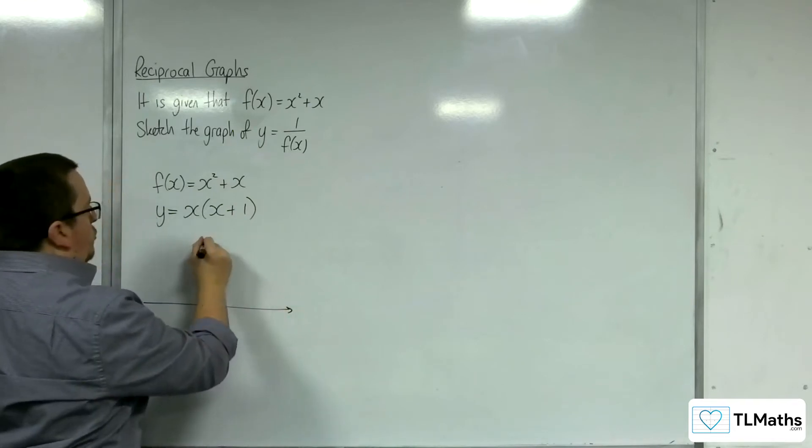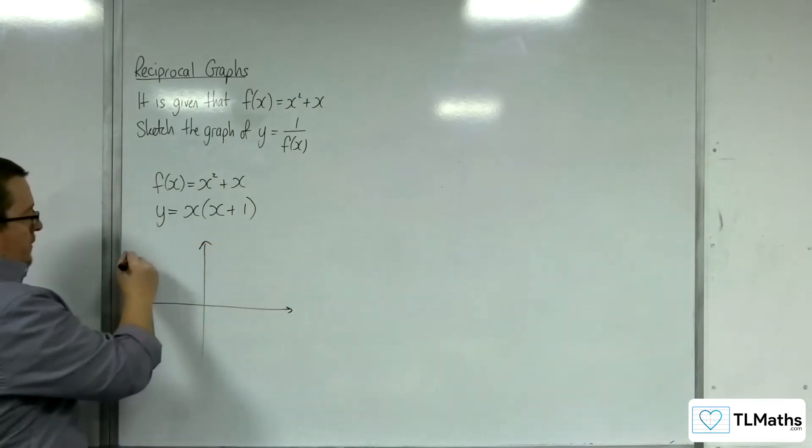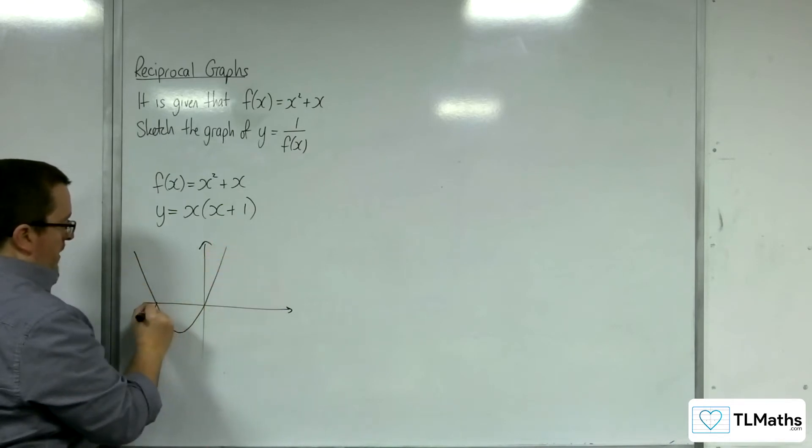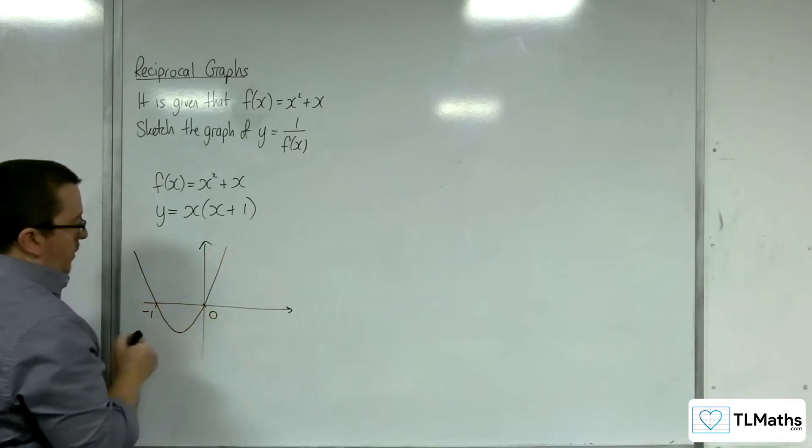So this is a quadratic equation that is going to be going through -1 and 0 on the x-axis.